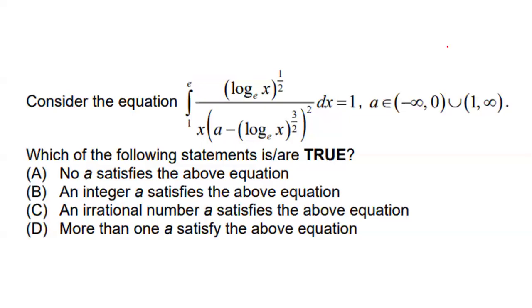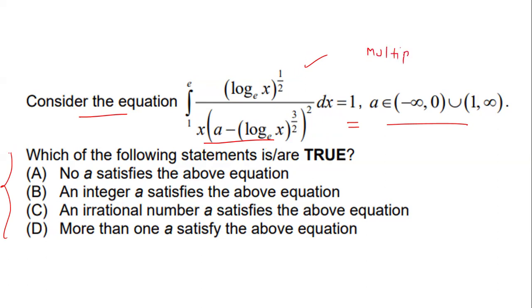Hello guys, in this video we are going to solve this problem. In this problem it is given that consider the equation where this integral is equal to 1 and where a belongs to minus infinity to 0 union 1 to infinity. We have to tell which options are true for this equation, and this is multiple choice so more than one options can be correct.